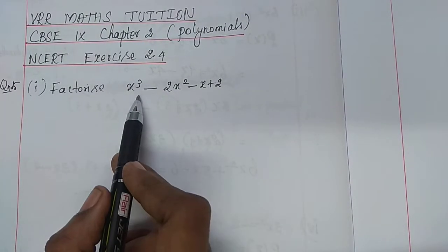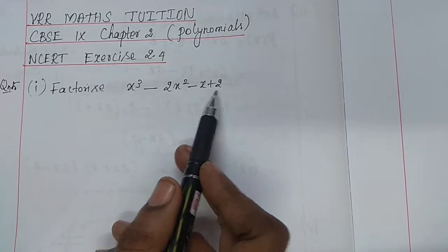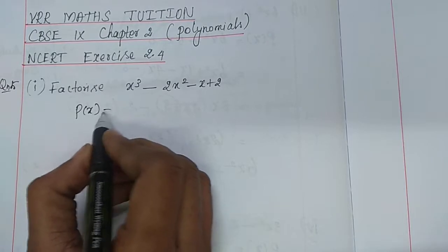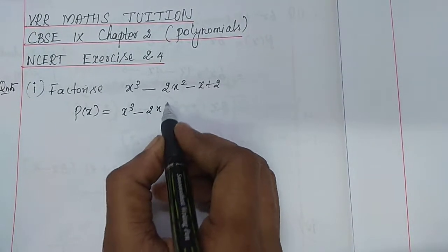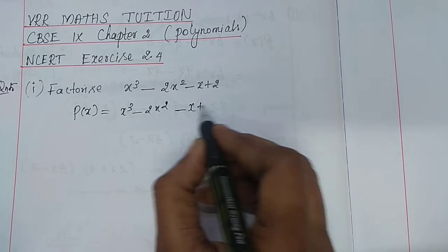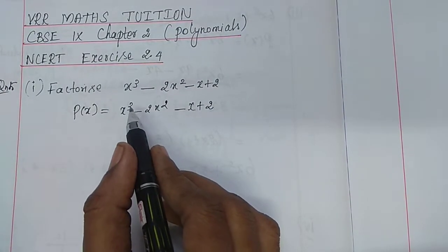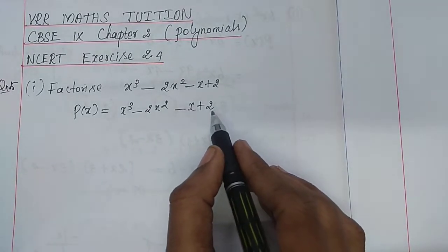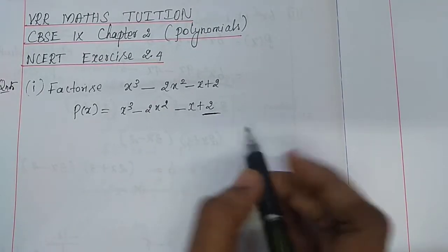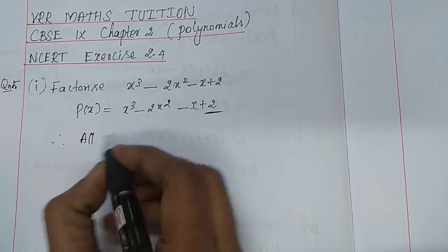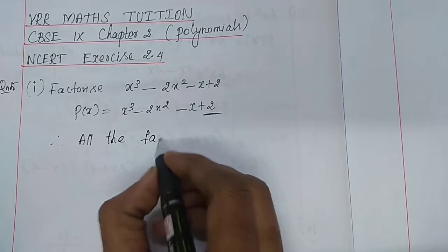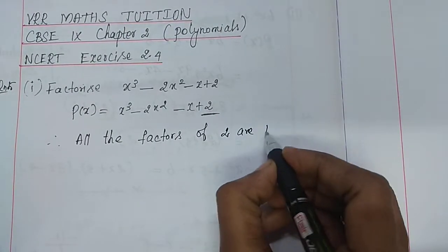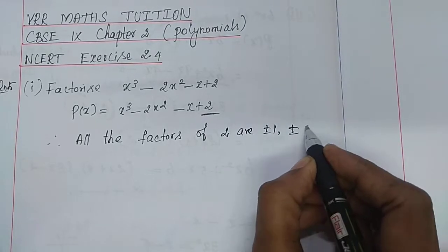So, factorize x cube minus 2x square minus x plus 2. Write the given polynomial as P of x: x cube minus 2x square minus x plus 2. Here, the degree of the polynomial is 3. Therefore, first we write all the factors of the number 2. All the factors of 2 are plus or minus 1, plus or minus 2.